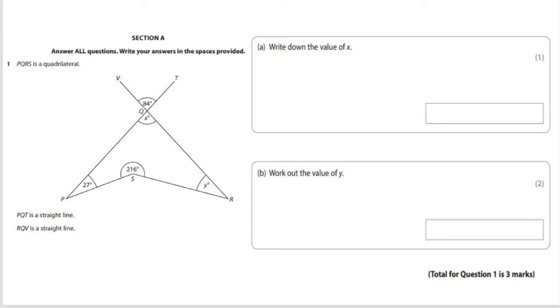As you can see this question involves angles. The first question asks you to write down the value of x. If you look at x there's an angle that's opposite which is 84 degrees. Now opposing angles are always congruent and congruent means the same.